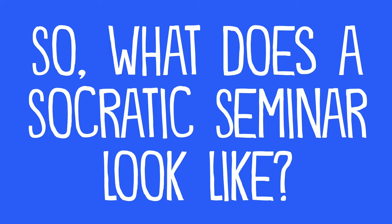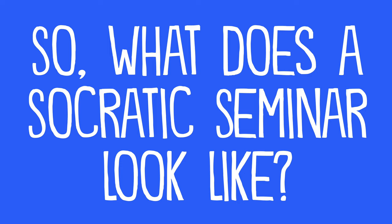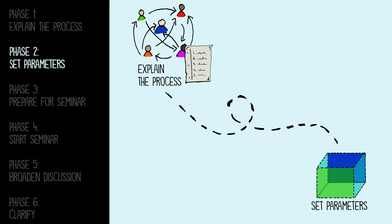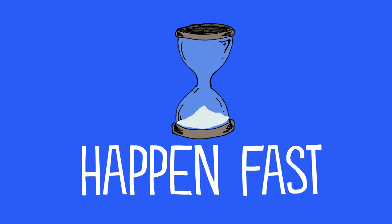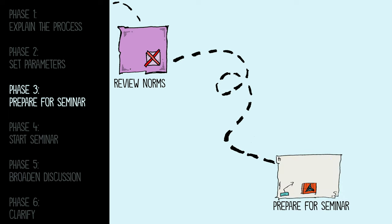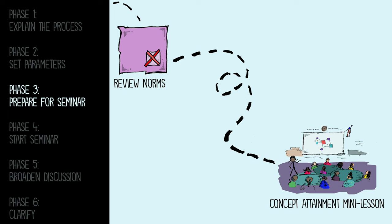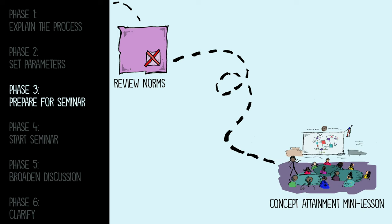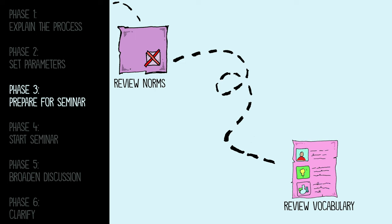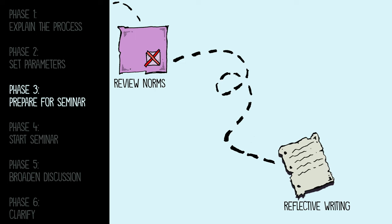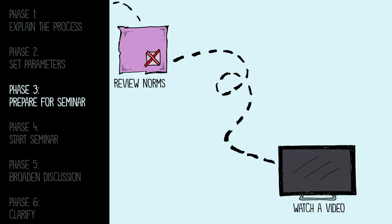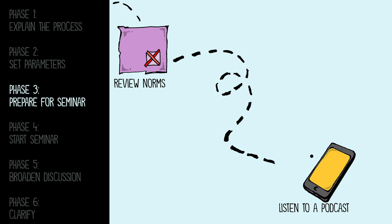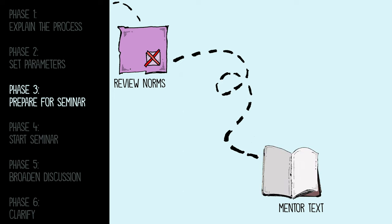So what does a Socratic seminar actually look like? Here's an example. In phase one, you explain the process. In phase two, you set the parameters by reviewing norms. Note that these first two phases are often fast. In phase three, you prepare your students — you might do a concept attainment mini lesson, run an experiment, and review vocabulary. Students might do some reflective writing, watch a video, listen to a podcast, or engage with a mentor text.